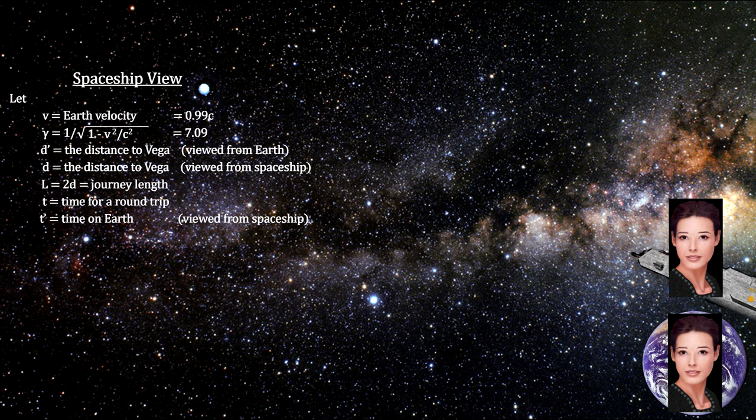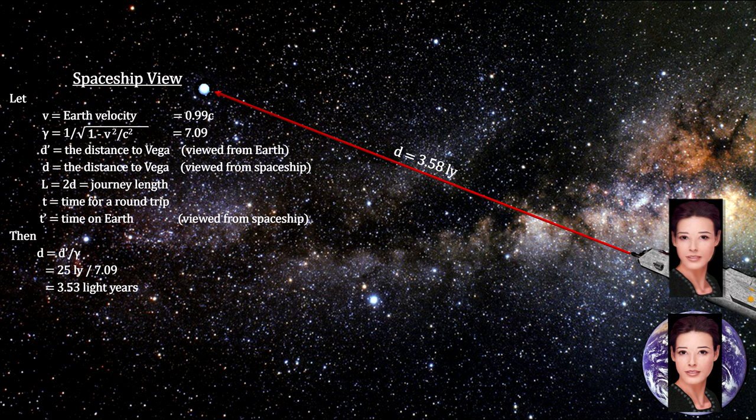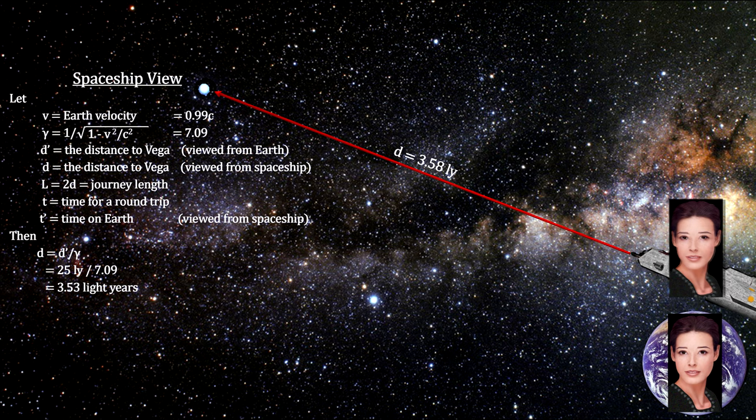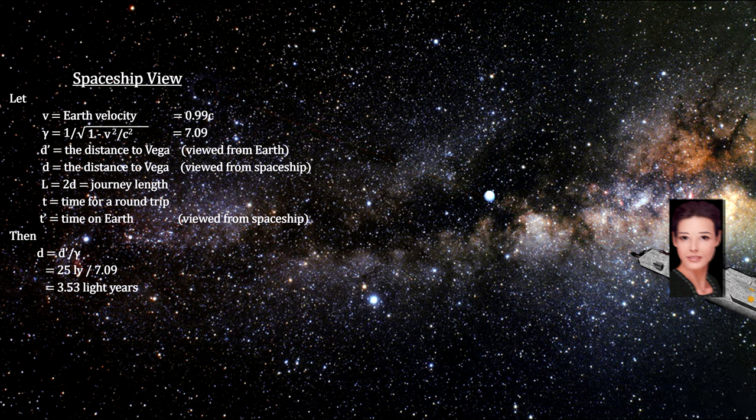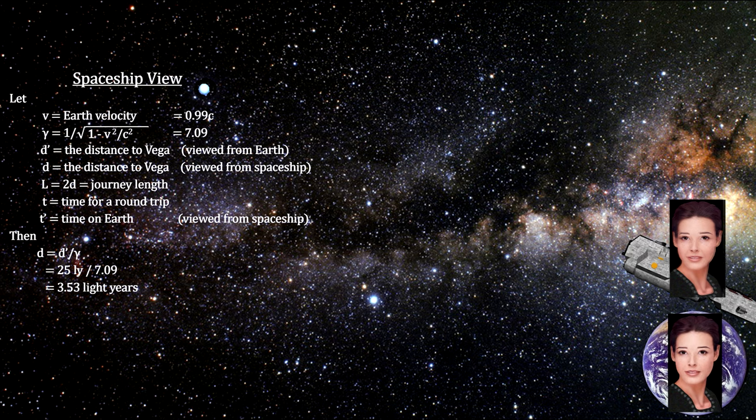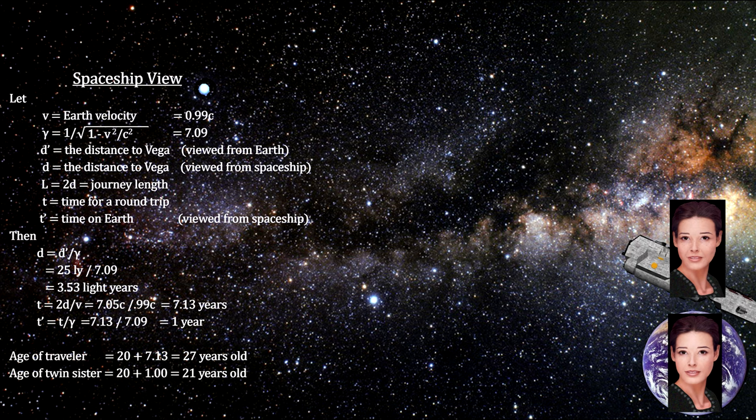But from the point of view of the twin on the spaceship, she is motionless and the twin on Earth is moving away and back. And like our cosmic ray muons, she sees the distance to Vega at only 3.5 light years due to space contraction. She also sees the twin on the ground aging slower than her over the seven-year journey. By her observations, her sister will be only one year older on her return due to time dilation—that's six years younger than she is, not 27 years older.